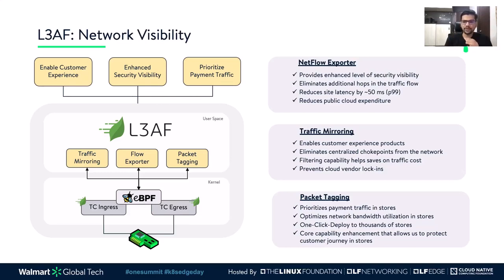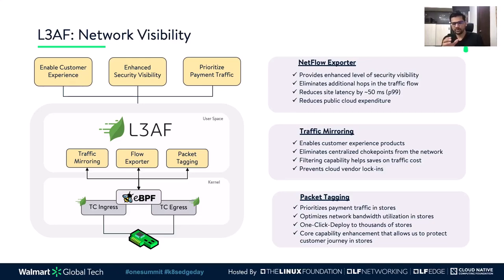eBPF provides a mechanism to plug code into predefined hook points in the kernel. Here we are using a network hook called TC, which is traffic control. All ingress and egress traffic goes through these hook points. Once we place our code at these points, it can see all the traffic and process it — we can extract information and act on it, pass data to higher layers of the stack, drop the traffic, redirect it to some other host, or manipulate traffic by changing packet fields. All this is done in the kernel, yielding the best performance without carrying the packet up to user space, which would involve multiple context switches.